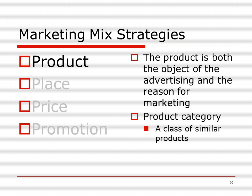Here are the marketing mix strategy elements: product, place, price, and promotion. The product is both the object of advertising and the reason for marketing. The product category is a class of similar products.